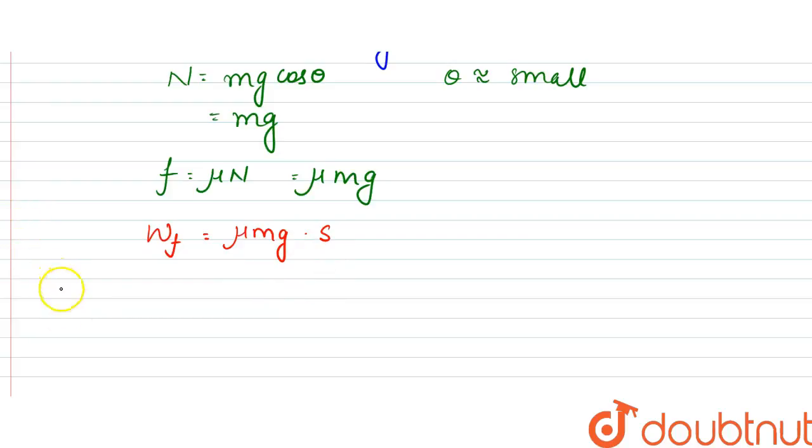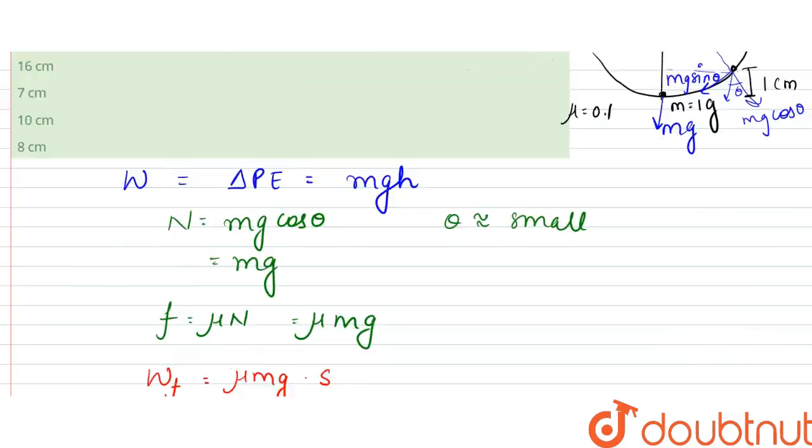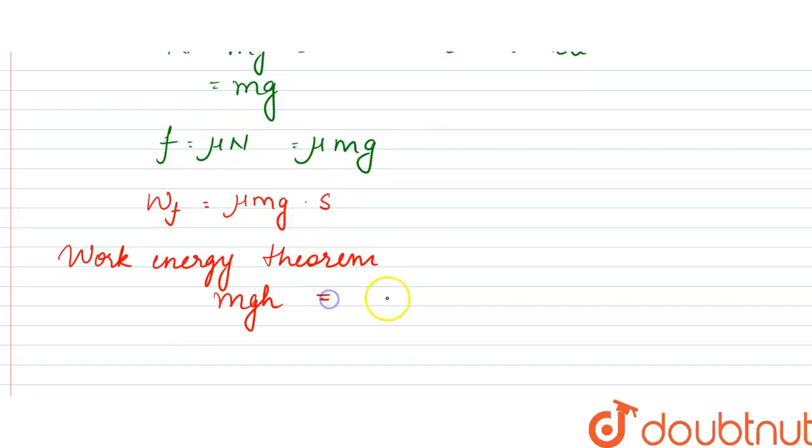Using work-energy theorem, mgh, that is the work done from going from here to there, is equal to the frictional work done, so that would be equal to mu mg s.